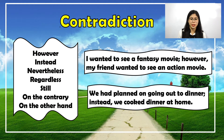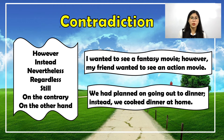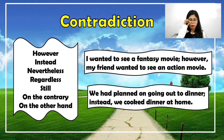Example: 'I wanted to see a fantasy movie; however, my friend wanted to see an action movie.' The conjunctive adverb 'however' establishes contradiction — one person wants to see a fantasy movie but the friend wants to see an action movie, so there is an opposing idea; they don't have the same preference. Another example: 'We had planned on going out to dinner; instead, we cooked dinner at home.' The conjunctive adverb 'instead' shows contradiction — they planned to eat outside but ended up cooking at home.